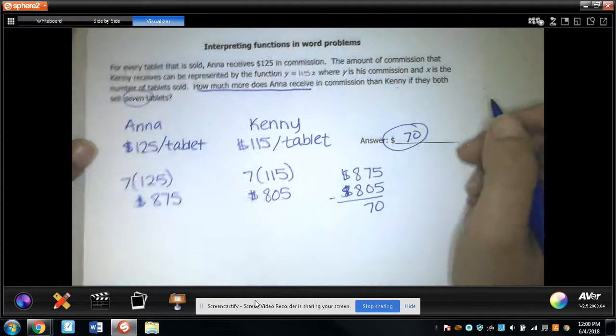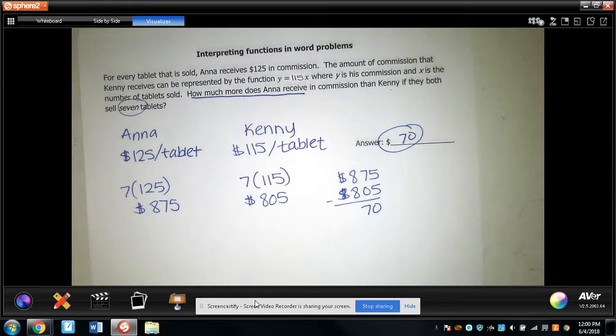So Anna will make $70 more than Kenny. I hope this was helpful. Please see me if you have any questions.